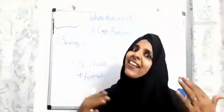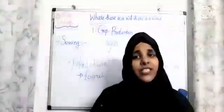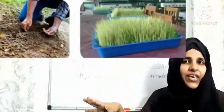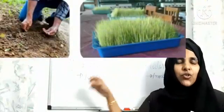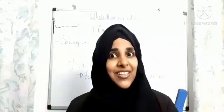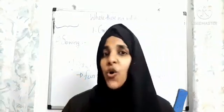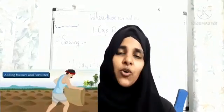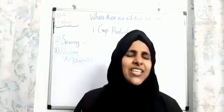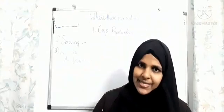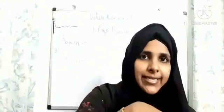Modern tools also save our time and labor. In sowing seeds, we use two methods — direct sowing and transplanting. Good plants can be transplanted from pots. After sowing, we need to add some manures or fertilizers for the growth of the plant. So the third practice in agriculture is adding manures or fertilizers.